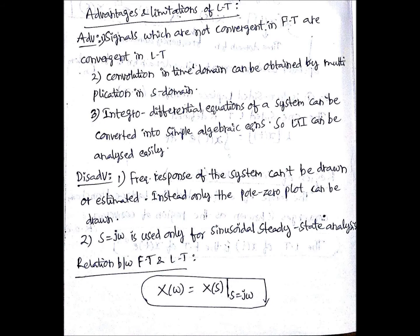Okay, because we are not considering the initial states, right? And the second disadvantage is that S equals j omega is used only for sinusoidal steady state analysis. We can't use this during transient conditions also.